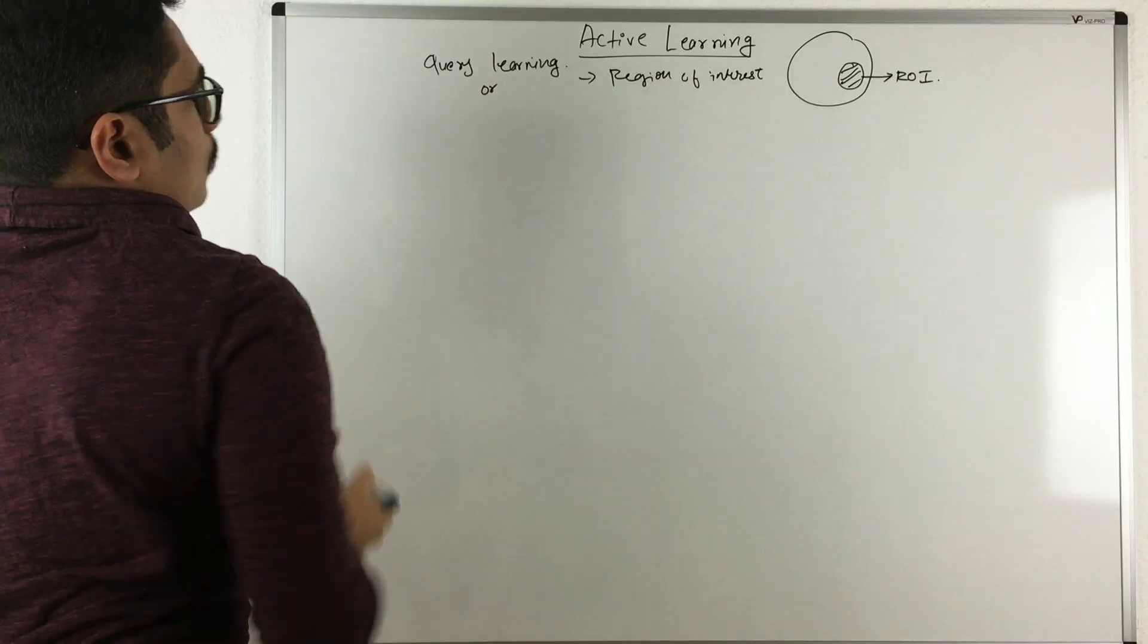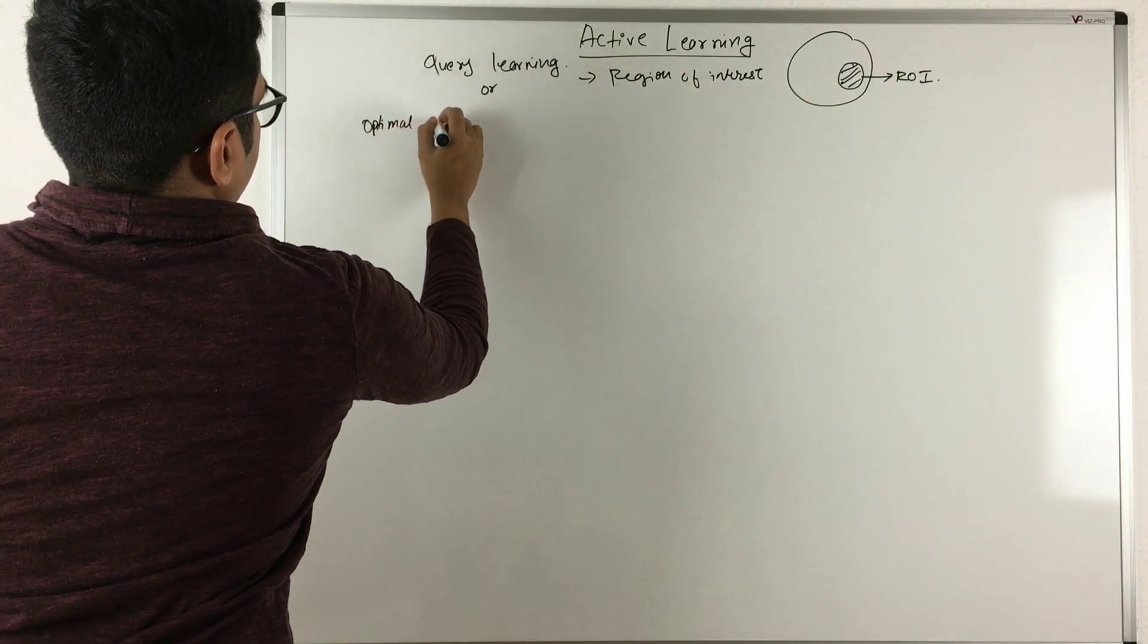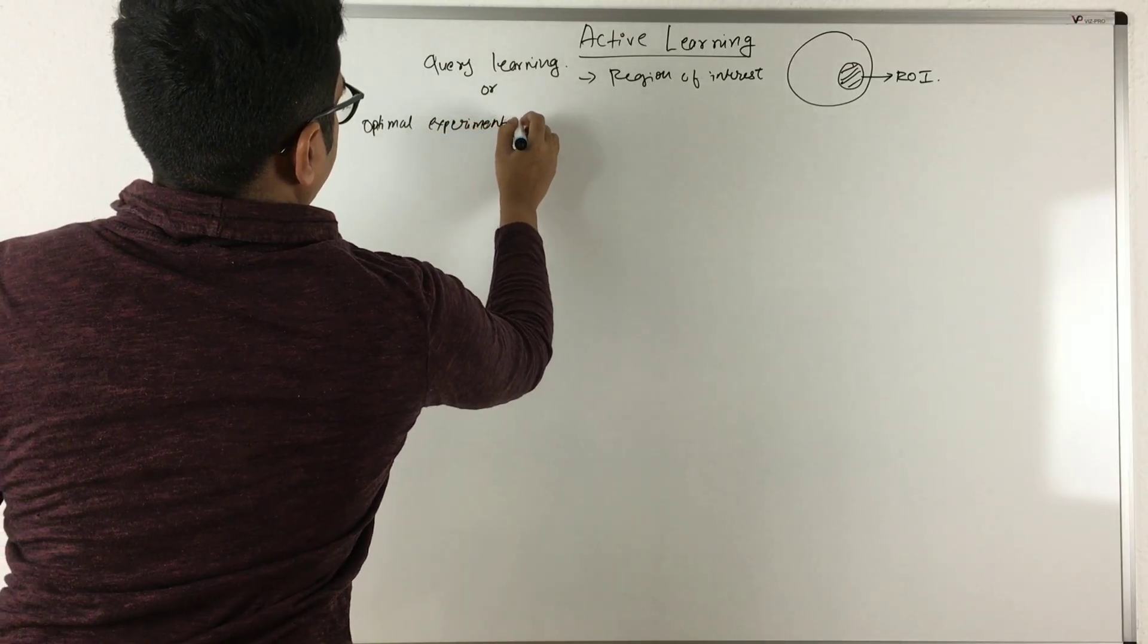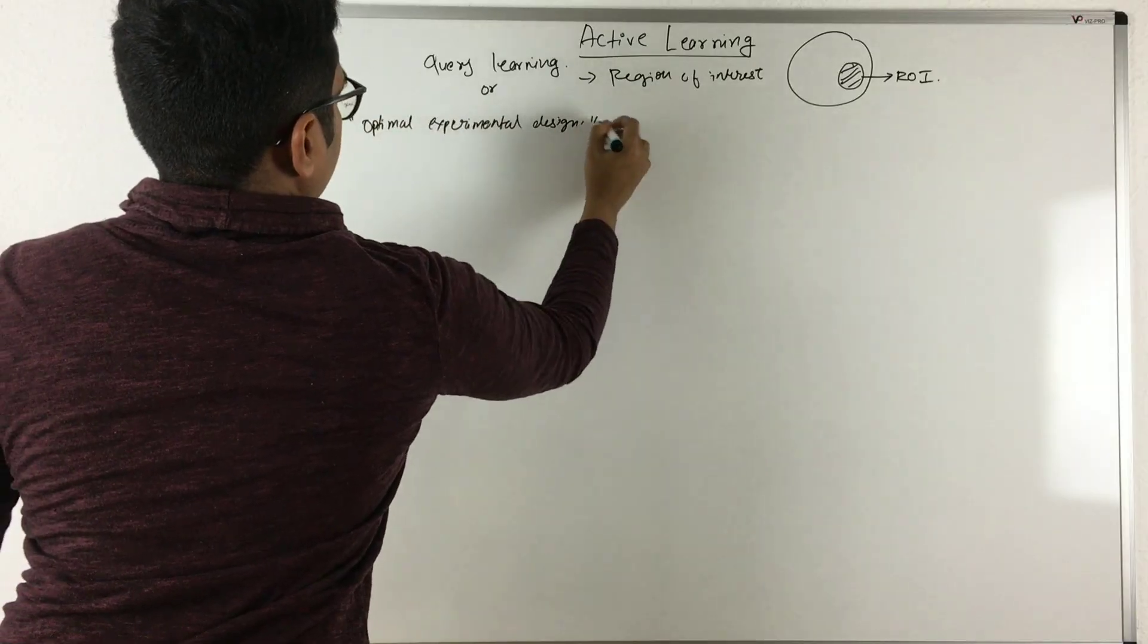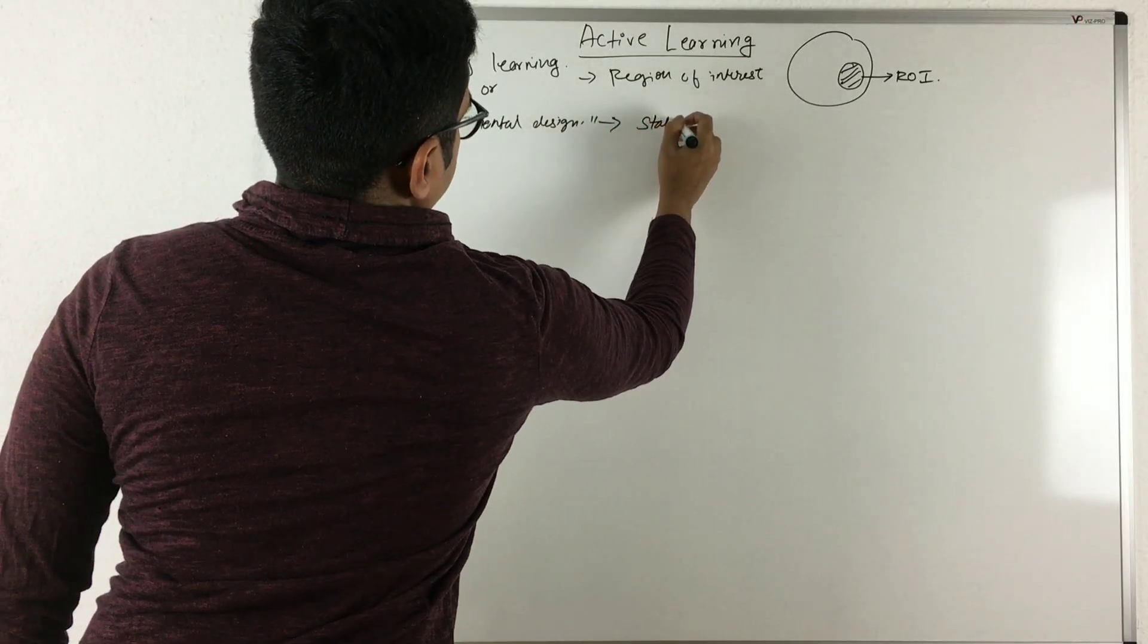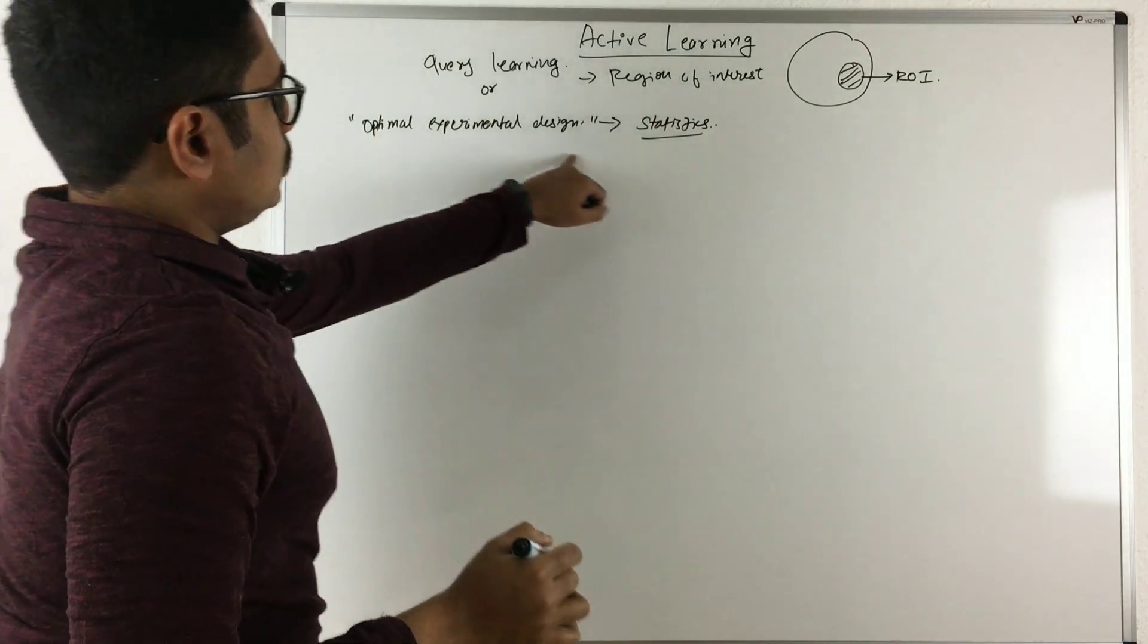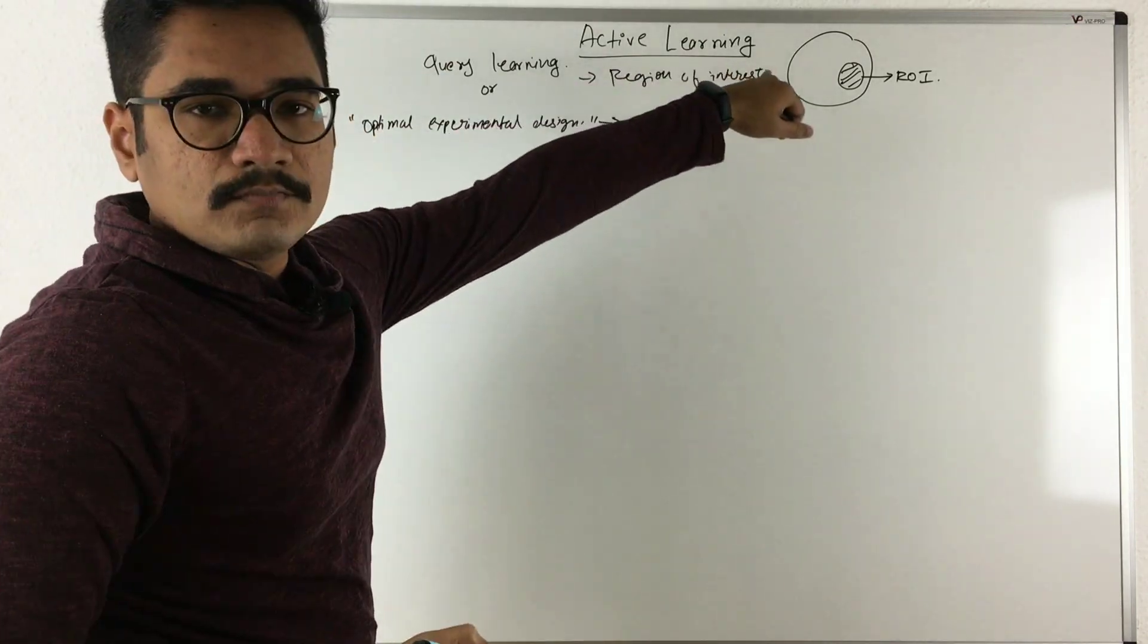And this is also sometimes called optimal experimental design. Now this term is mostly used in statistics. There you encounter this word, optimal experimental design, that means active learning.